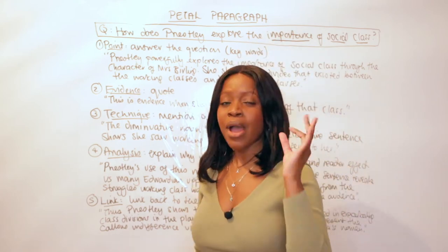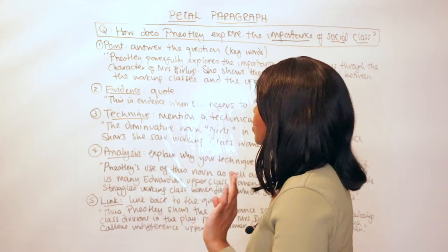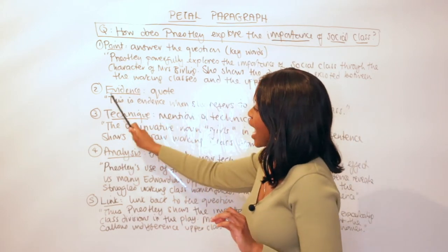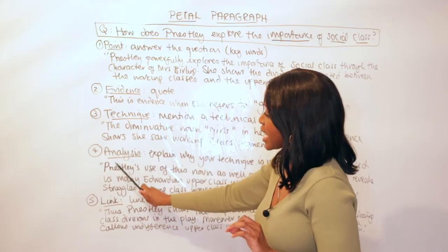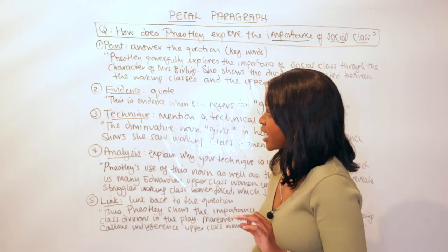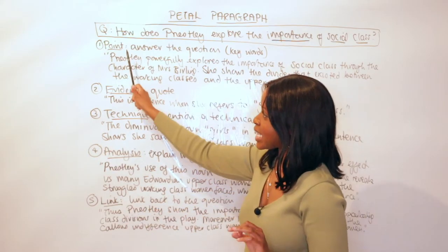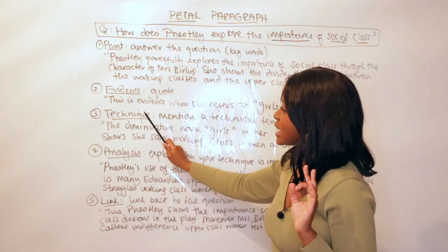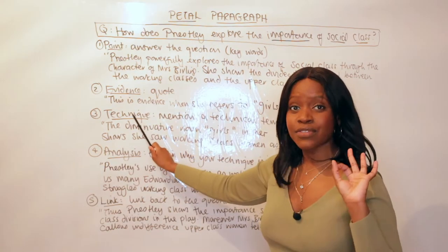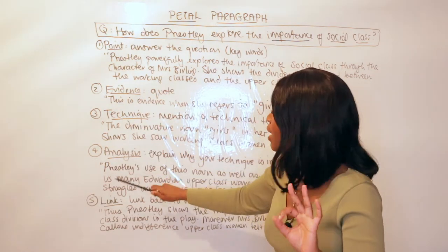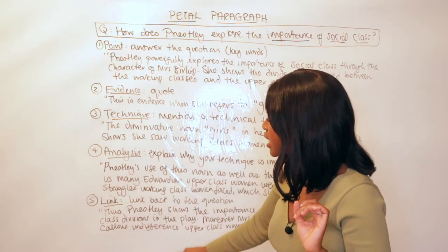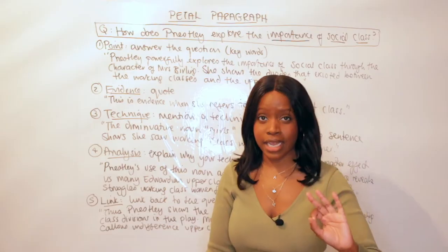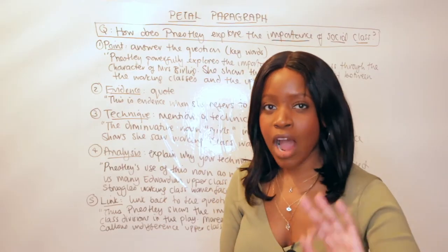PETAL simply stands for: Point, Evidence, Technique, Analysis, Link. The P stands for Point, the E for Evidence, the T for Technique, the A for Analysis, and the L for Link.